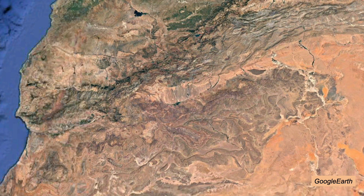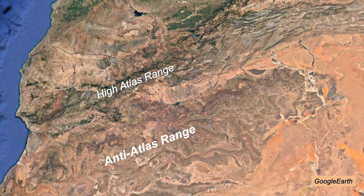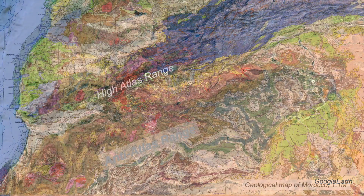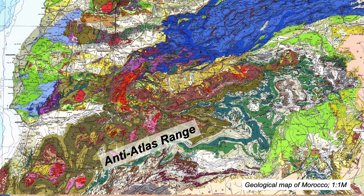In part one, we looked at the young High Atlas range. So now we go to the folds of the Anti-Atlas, and we will be guided by the geological map.